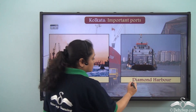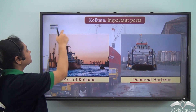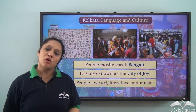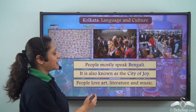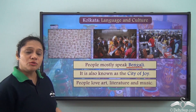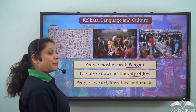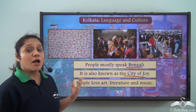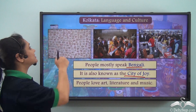The language mostly spoken in Kolkata is Bengali. Kolkata is also known as the City of Joy — people here love art, literature, music, and discussions around these subjects.